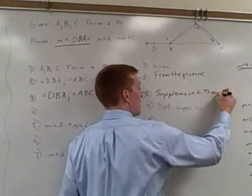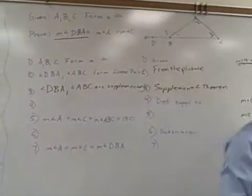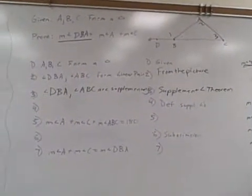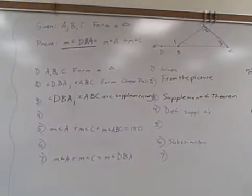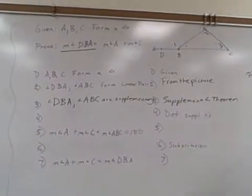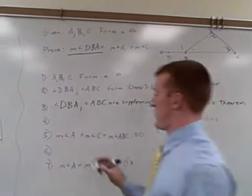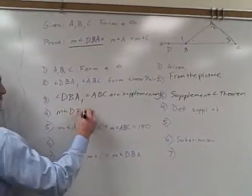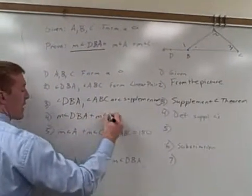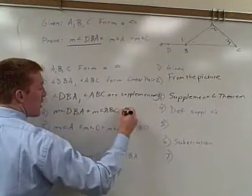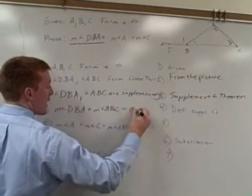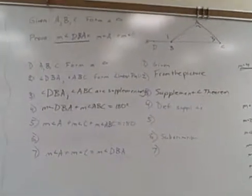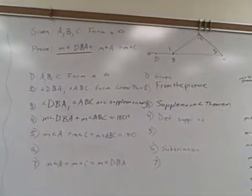How does supplementary help me? The measure of angle DBA plus the measure of angle ABC equals 180 degrees. The reason is the definition of supplementary angles — that's what it means to be supplementary.